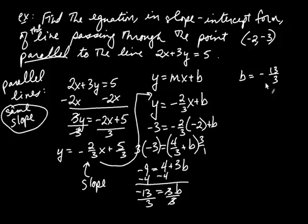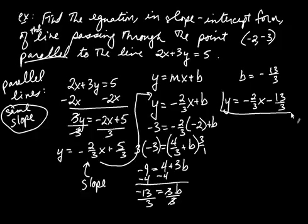Replacing b with negative thirteen-thirds, the answer is y equals negative two-thirds x minus thirteen-thirds. This is the slope-intercept form of my line. We'll see some other forms of equations of lines soon, but the most important by far is the slope-intercept form like we've been working with.